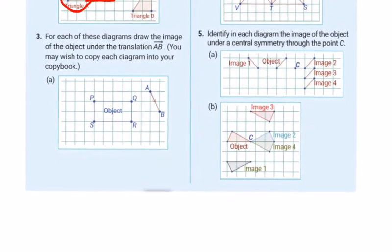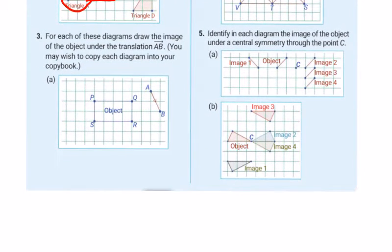Question 3: For each of these diagrams, draw the image of the object under the translation AB. You'll copy these into your copybook. Obviously you're not going to be able to draw them on a screen like this.